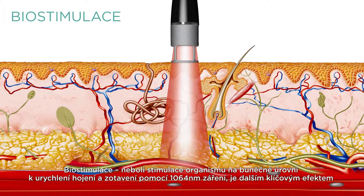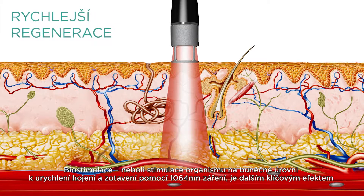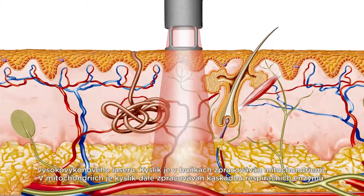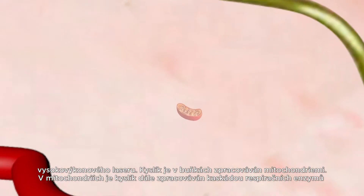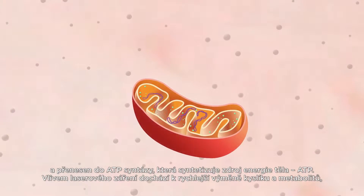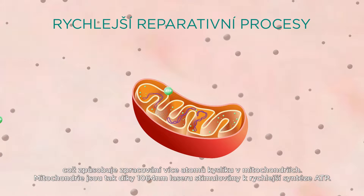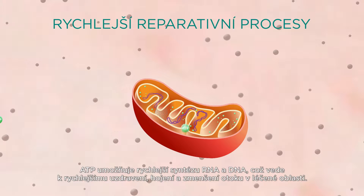Biostimulation — stimulating the organism on the cellular level to enhance healing and recovery — is another key effect of the high-intensity laser with a 1064 nanometer beam. Oxygen is processed in cells by mitochondria, through a cascade of respiratory enzymes, and delivered to ATP synthase, which synthesizes ATP, the organism's source of energy. A faster exchange of oxygen and metabolites due to laser irradiation causes more oxygen atoms to reach mitochondria, further stimulating ATP synthesis. This leads to faster synthesis of RNA and DNA, and ultimately to faster recovery, healing and edema reduction in the treated area.